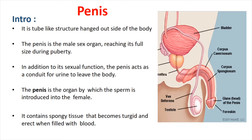The penis contains spongy tissue that becomes turgid and erect when filled with blood. It has spongy tissue and it becomes turgid when it is erect. So, this is the introduction of the penis: it is a tube-like structure, a male sex organ, with two functions, and it has spongy tissue.